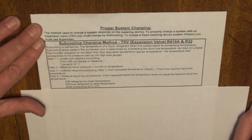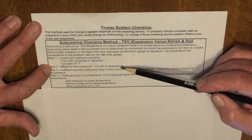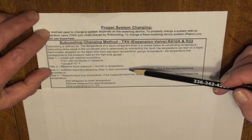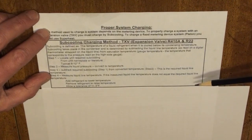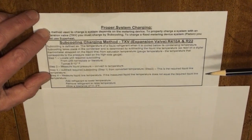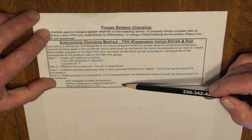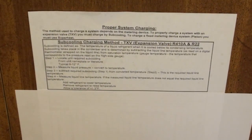According to our chart, from the unit nameplate or literature, an average subcooling is typically 8 to 12 degrees, though depending on which book you pick up, it may be as high as 20. Measure the liquid pressure and convert to temperature, then subtract the required subcooling to find the required liquid line temperature. Measure the actual liquid line temperature. If the measured liquid line temperature does not equal the required, add refrigerant to lower the temperature or remove refrigerant to raise the temperature. They allow plus or minus 3 degrees Fahrenheit to adjust the charge to a normal subcooling.